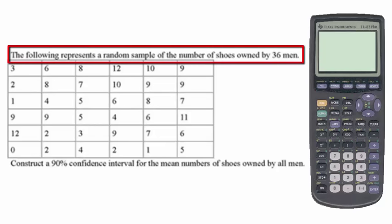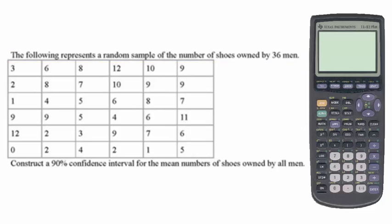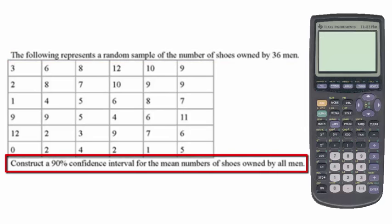The following represents a random sample of the number of shoes owned by 36 men. Construct a 90% confidence interval for the mean number of shoes owned by all men.